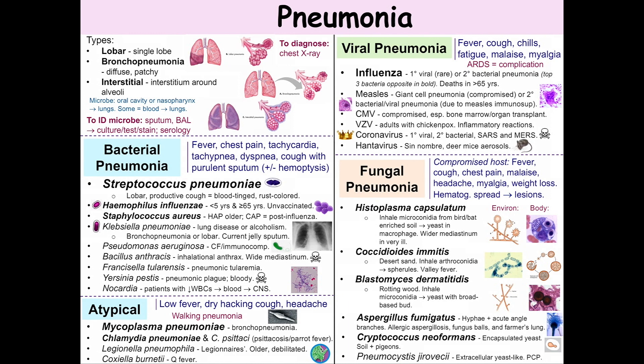Staphylococcus aureus is usually a hospital-acquired pneumonia, typically in older patients or those on ventilators. But there is a community-acquired pneumonia that tends to occur after influenza infections, and this can even cause infections in young, healthy people. It has three virulence factors: protein A, alpha-toxin, and Panton-Valentine leukocidin. Panton-Valentine leukocidin tends to be associated with a necrotizing pneumonia.